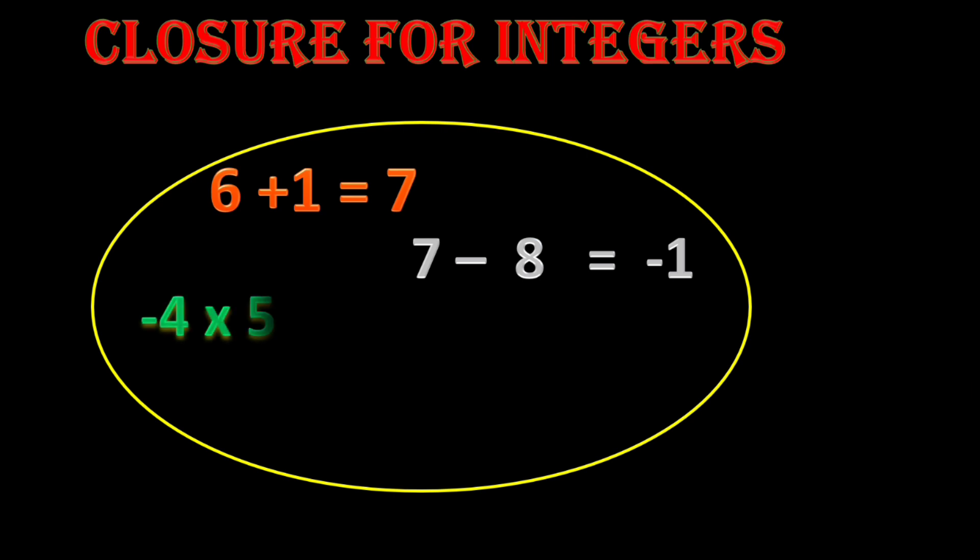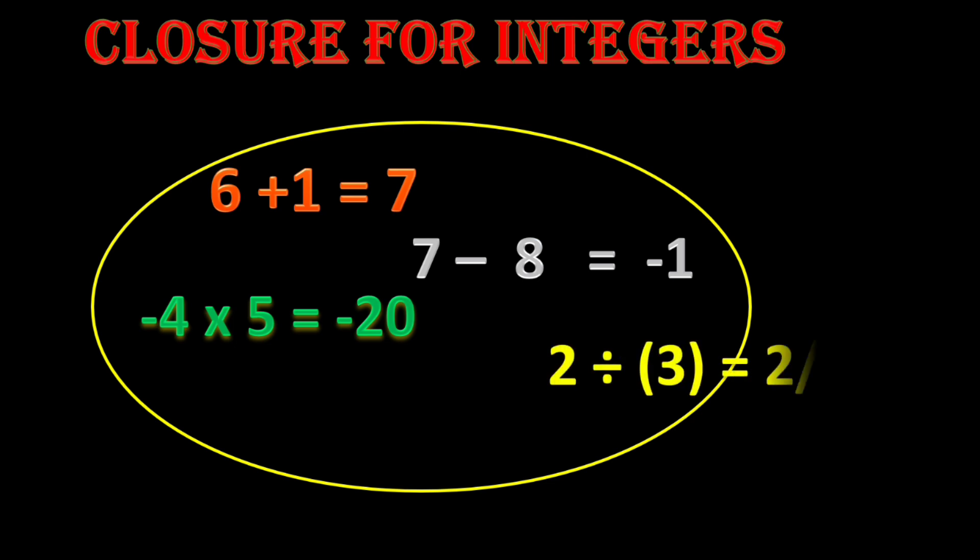For multiplication: whenever we multiply any two integers, the product also belongs to the integer set. But when we divide two integers, we do not always get an integer as the quotient. So addition, subtraction, and multiplication are closed for integers, but division is not closed for integers.